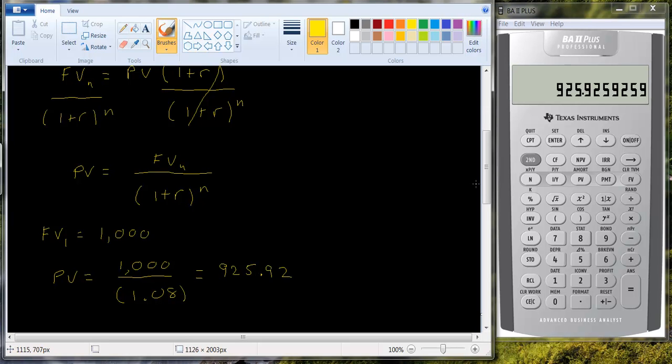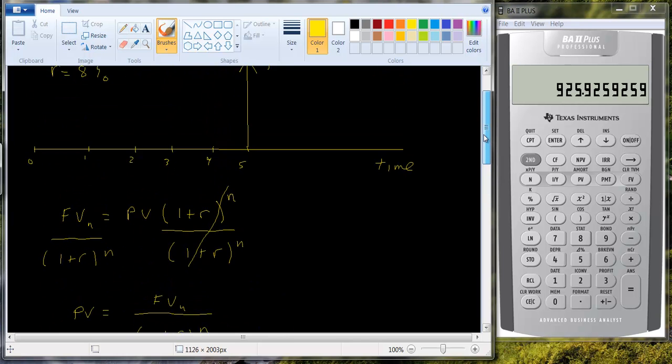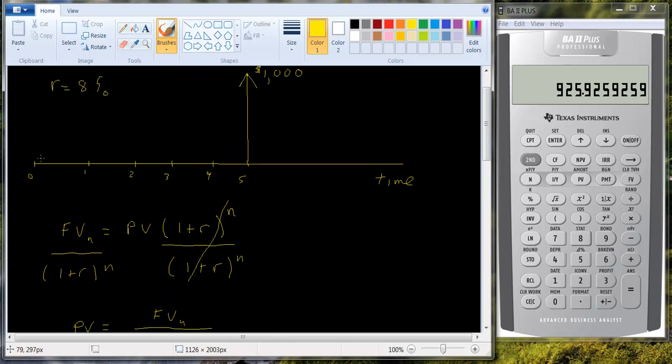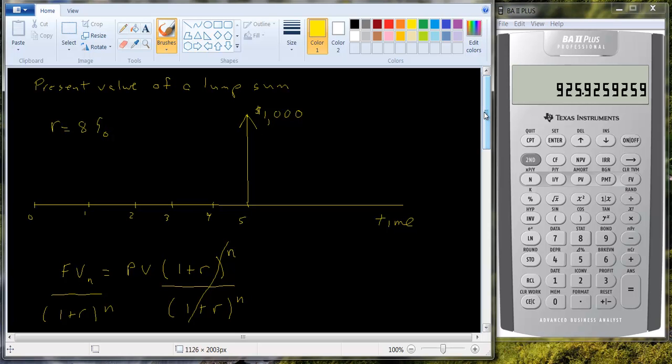Let's go back to our little picture here. Essentially, if this were cash flow in year one and we brought it back one period, the thousand would be nine twenty five ninety two. But we could do the same thing here. If we brought this back one period, it would now be worth nine twenty five ninety two.